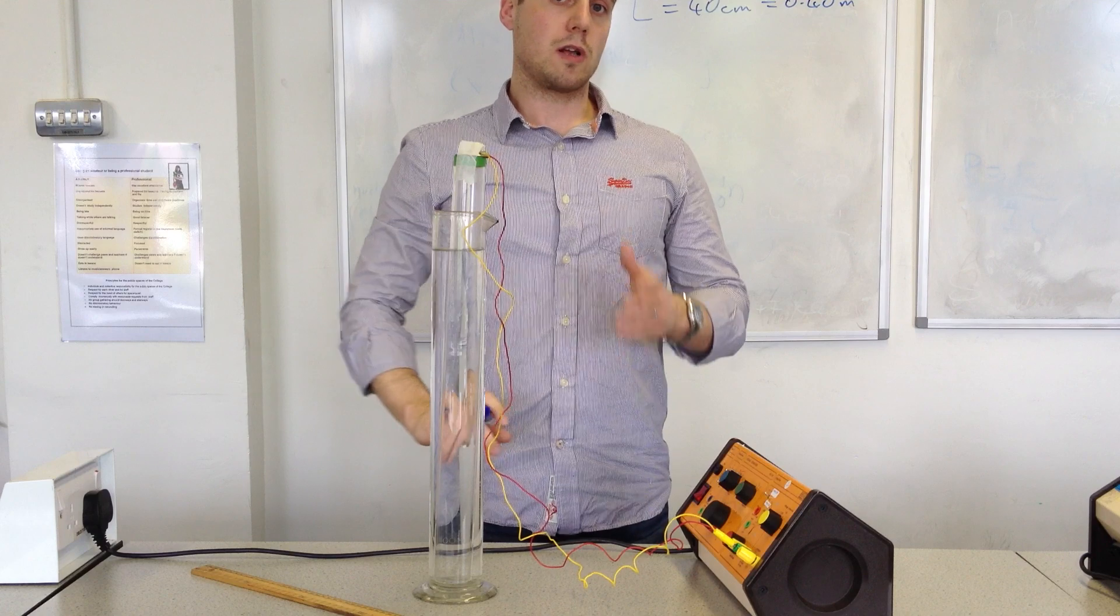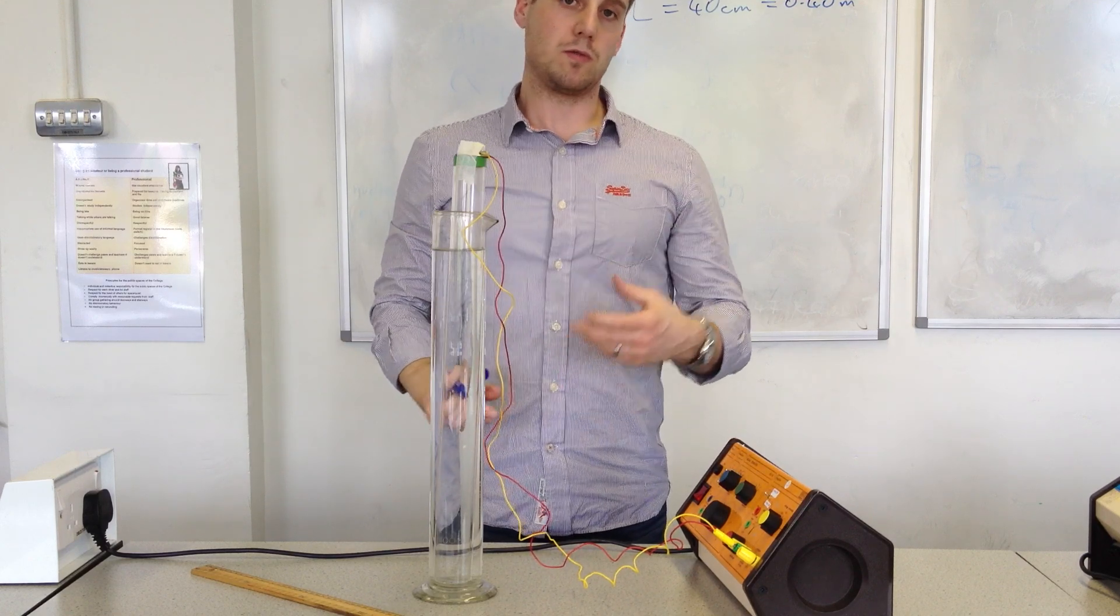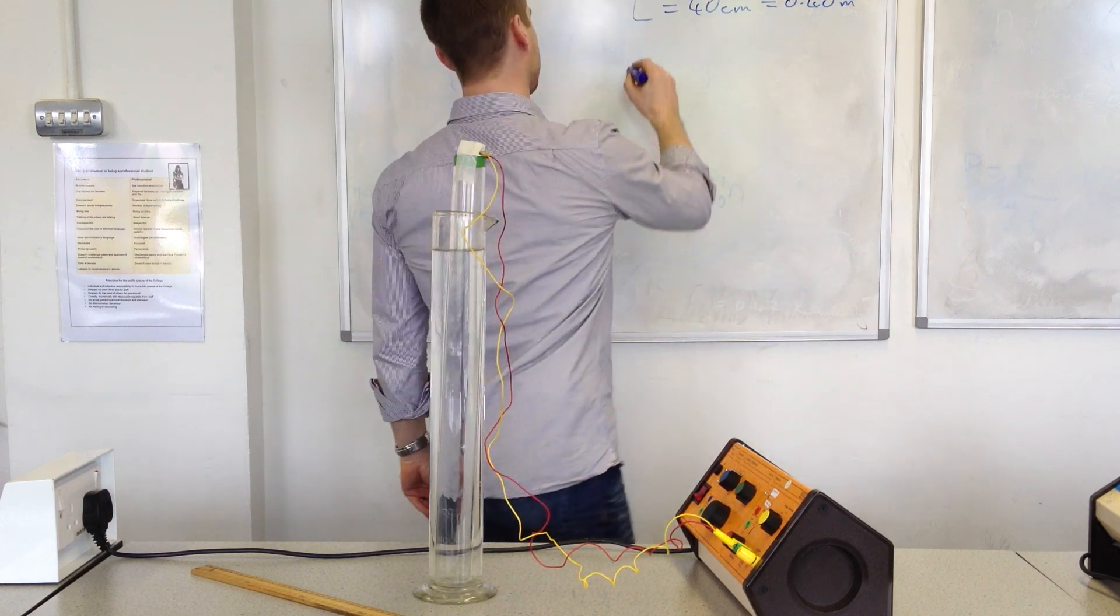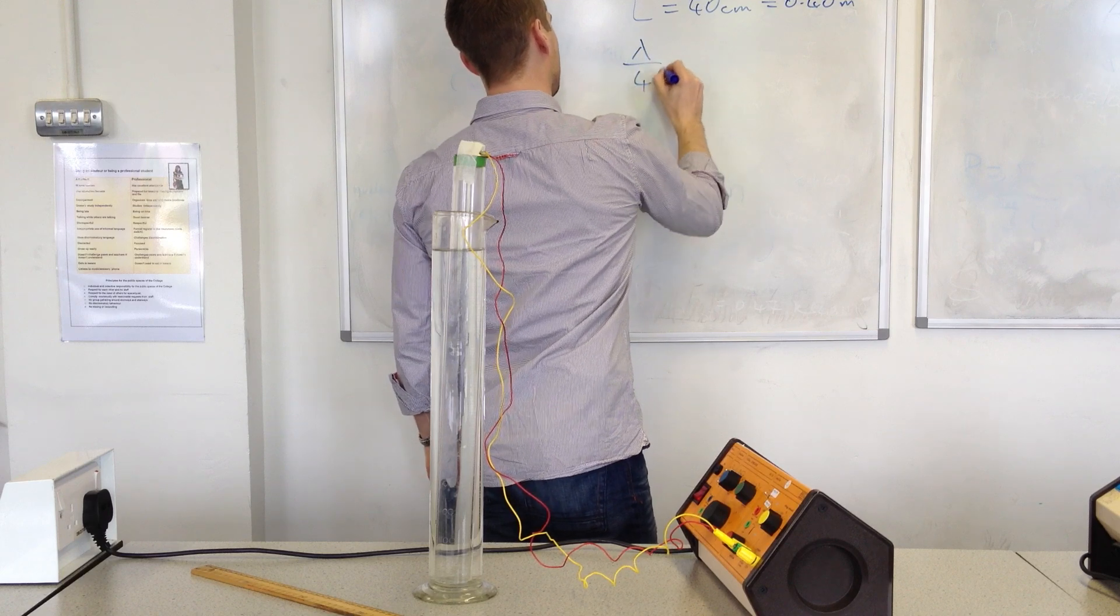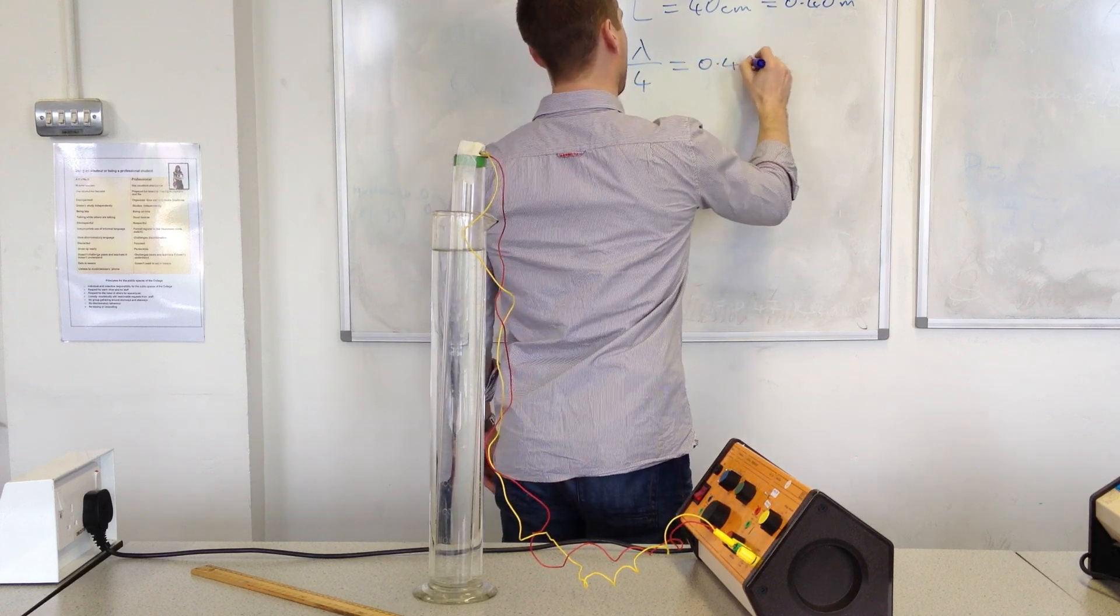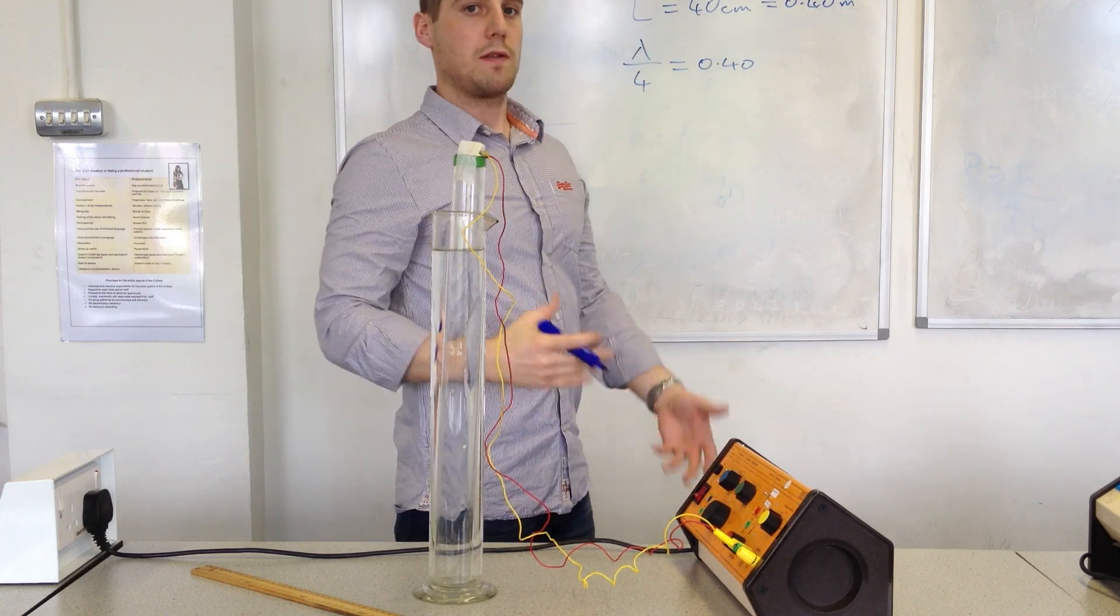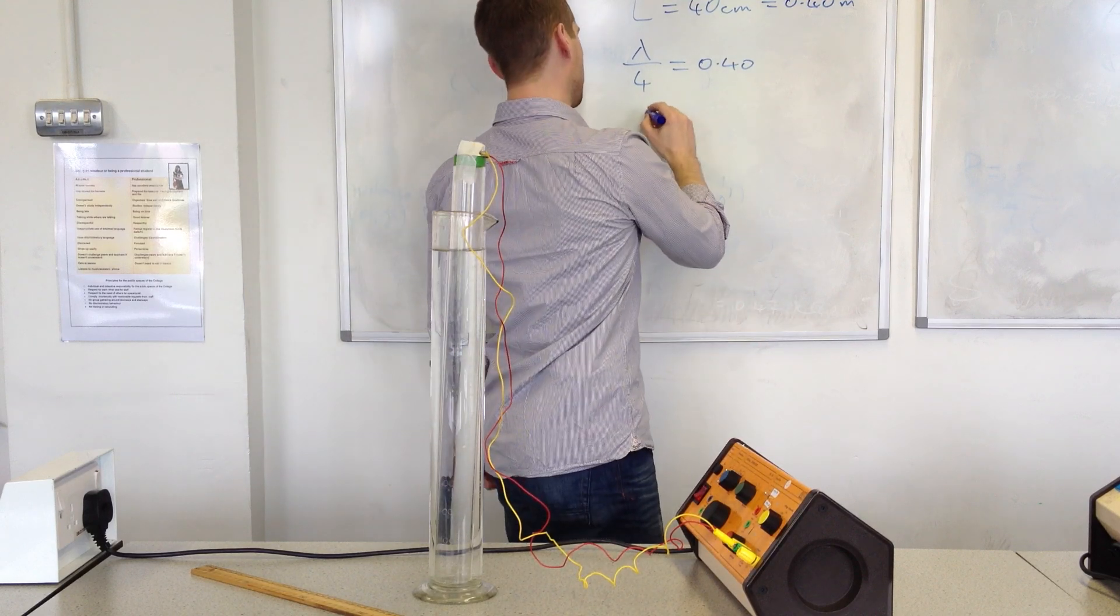For the fundamental in a closed pipe, that length of pipe is equal to a quarter of the wavelength. That means that the wavelength is equal to 1.6 meters.